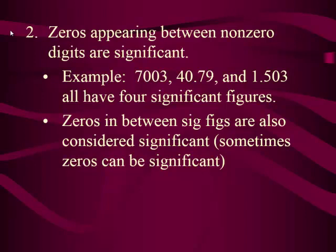Looking at the example 7,003: you know the seven is significant — rule number one. You know the three is significant — rule number one. But look at the placement of the zeros. They are in between the seven and the three — those are your bookends. All the zeros in between count. So the number 7,003 has four significant figures.